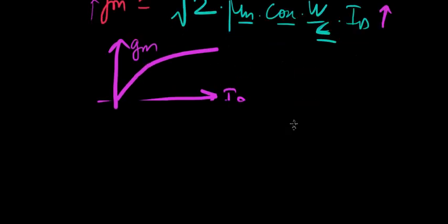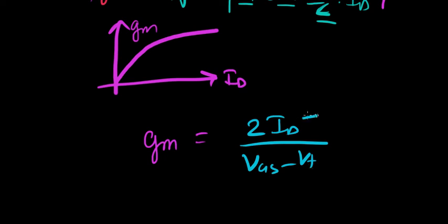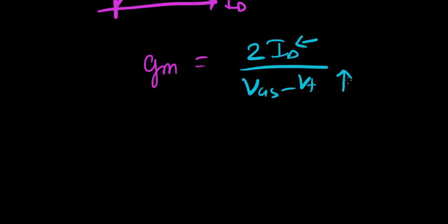GM equals 2 ID over VGS minus VT. Again if you see here what happens is if you keep your drain current constant and if you look at the variation of GM with VGS and VT what do you understand? With an increase in VGS you're going to have a decrease in GM. Why?